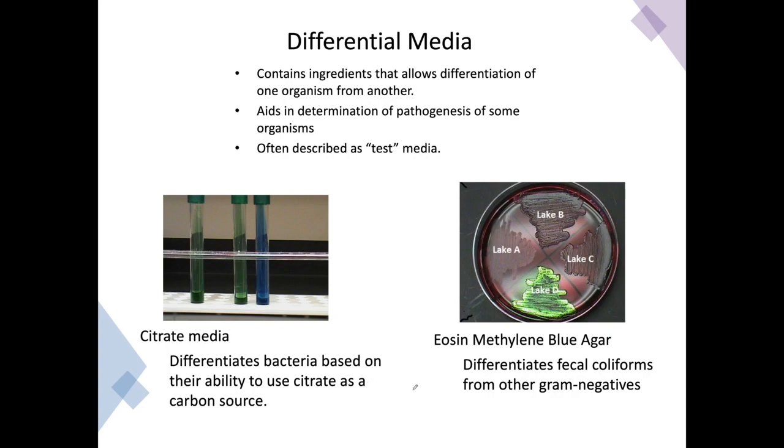A differential media is one that contains additional ingredients that allow us to differentiate one organism from another. We may have multiple bacteria growing, multiple prokaryotes growing on the same plate, but I am looking for some type of metabolic difference between them. In this case, this plate is called an EMB, eosin methylene blue agar. This particular test is able to differentiate between fecal coliforms, environmental coliforms, and non-coliforms. This is an environmental test.